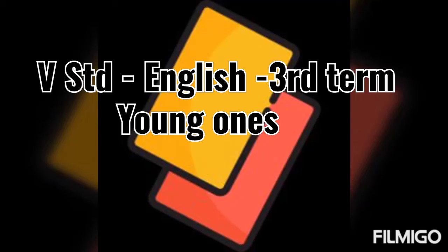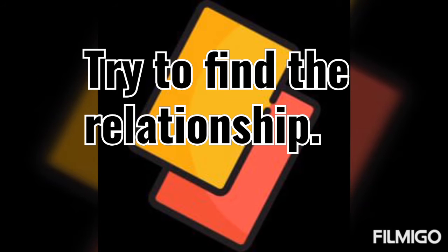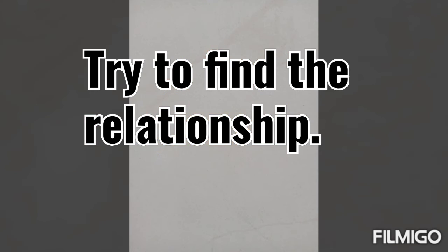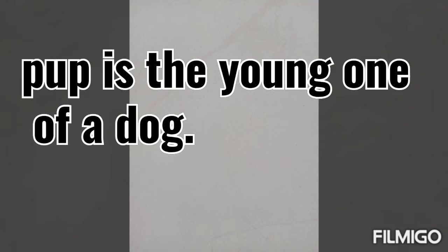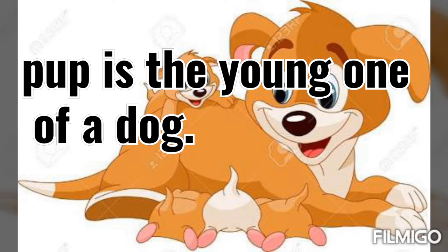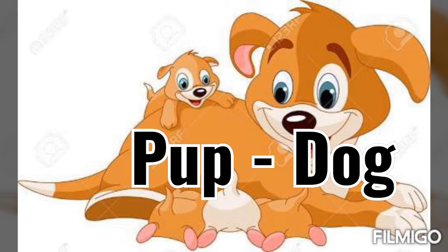Fifth standard English, third term — young ones. Try to find the relationship. Guess: what is the pup to the dog? Pup is the young one of a dog. The young one of a dog is pup.